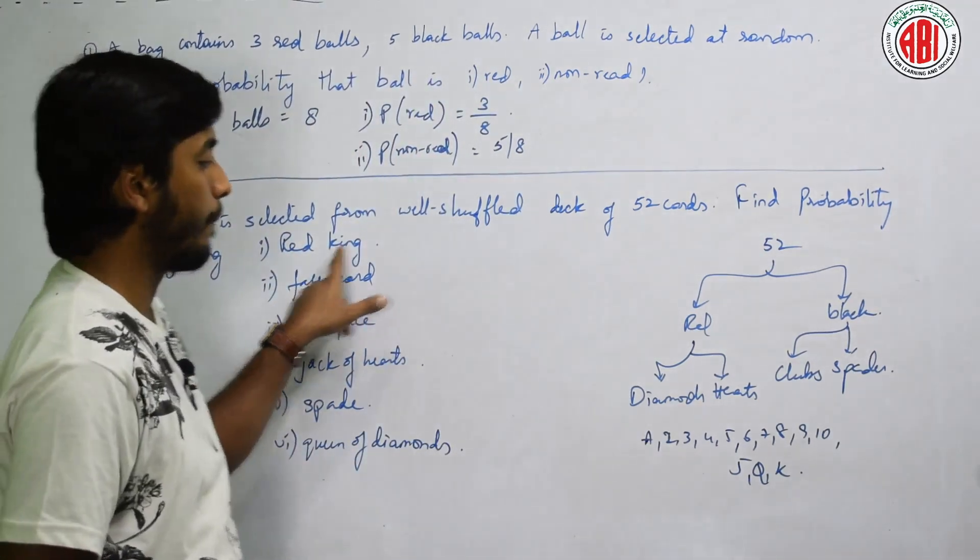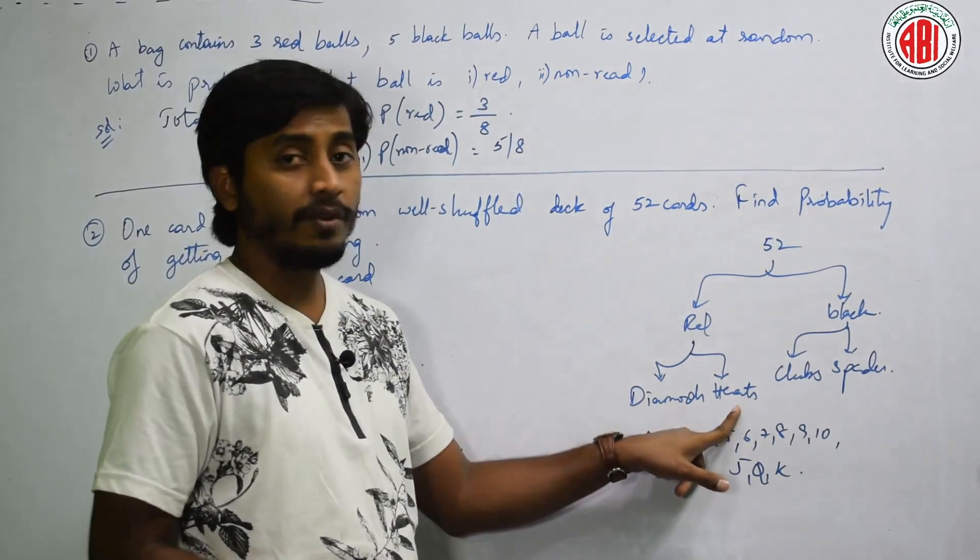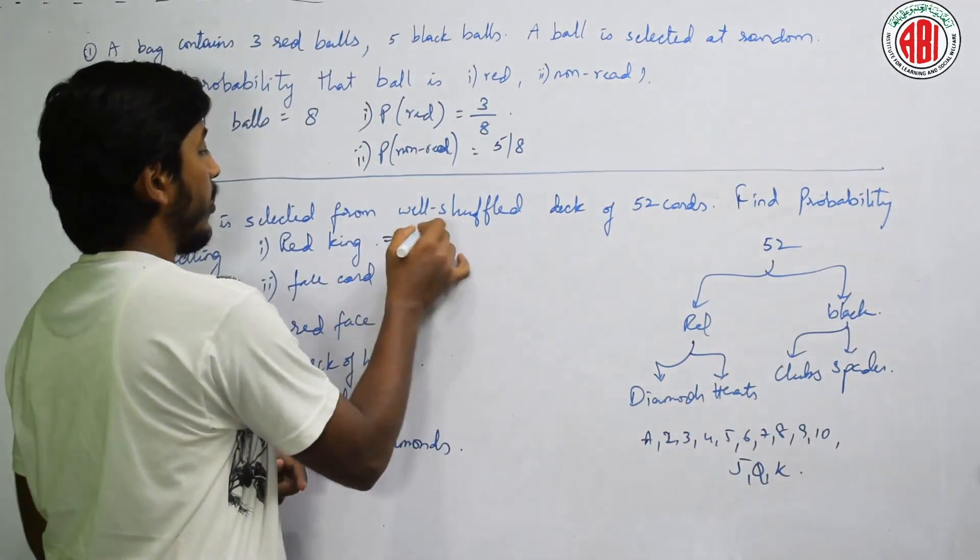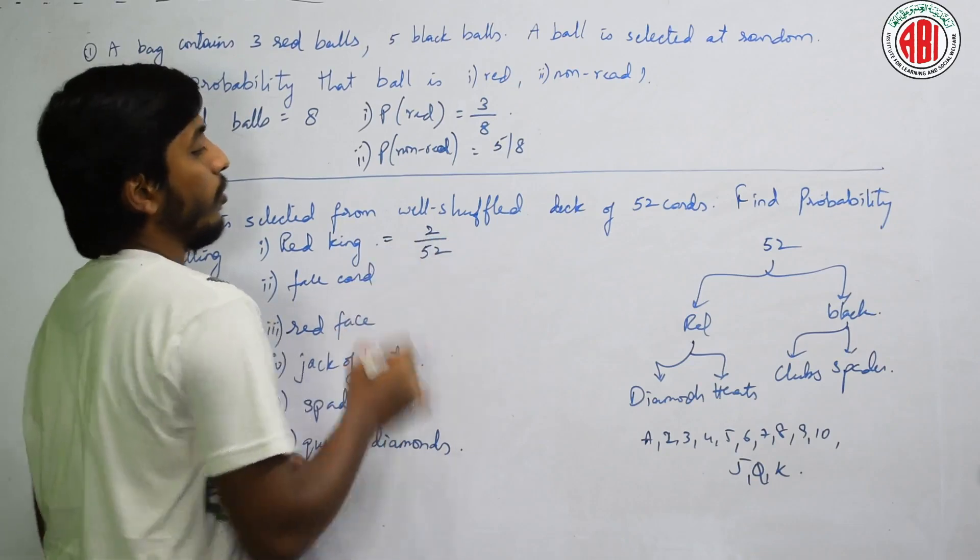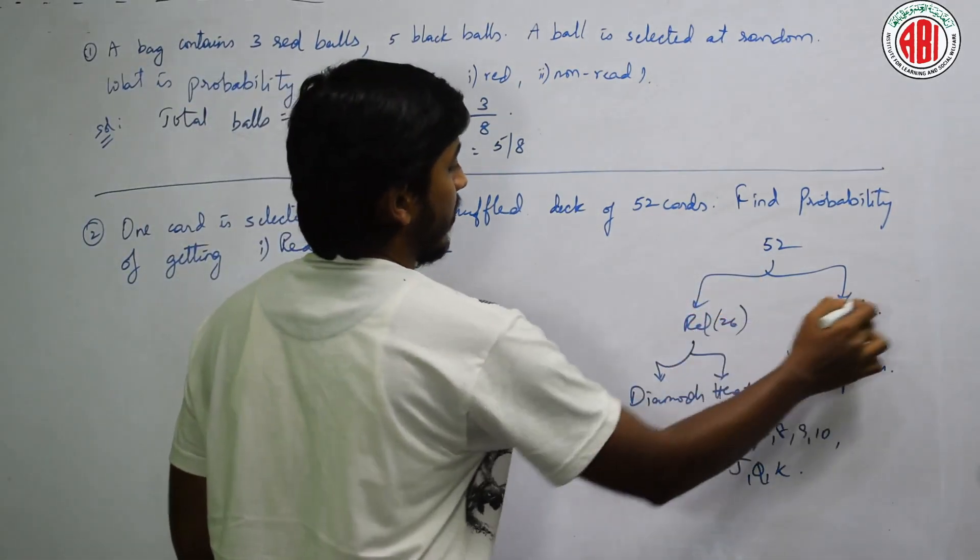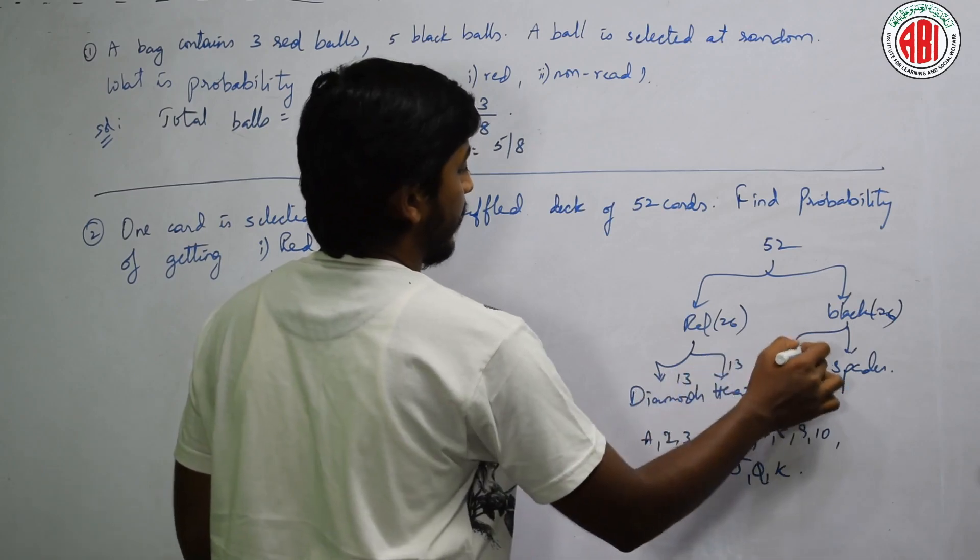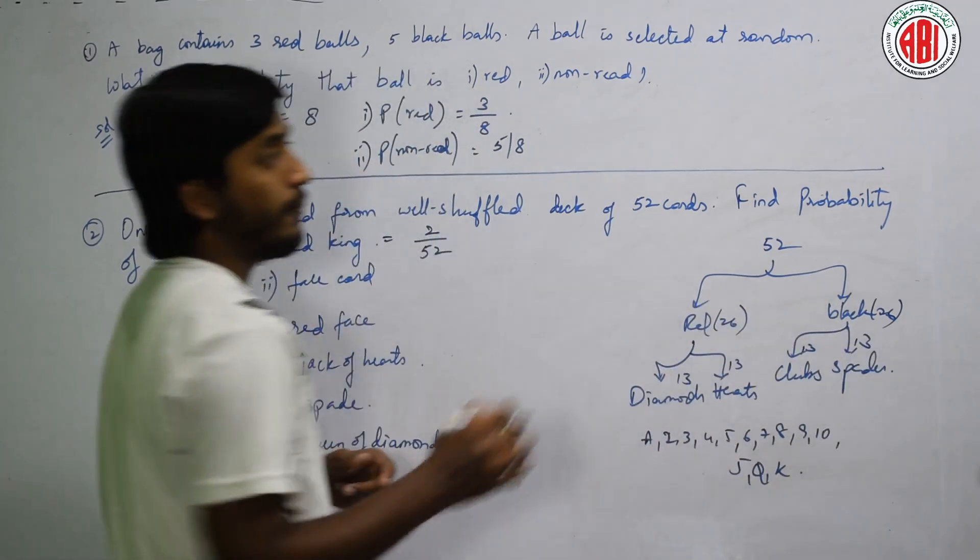Now see, red king. Red me kitne kings hai? 2 out of how many? 2 out of 52. Out of 52, red is 26, black is also 26. Diamond 13, heart 13, clubs 13 or spades b 13 cards.